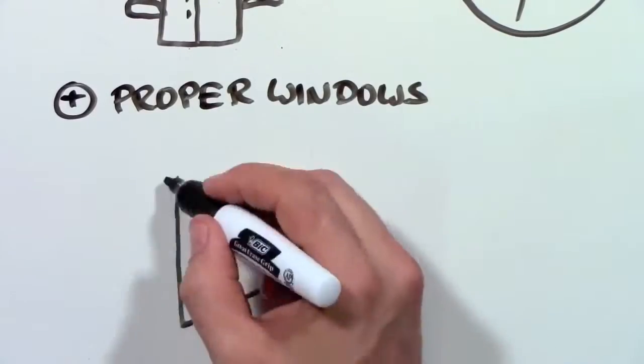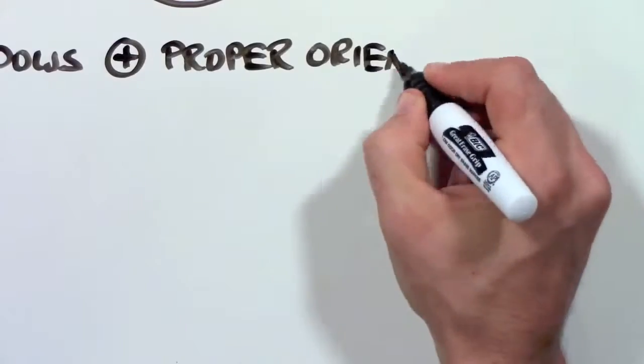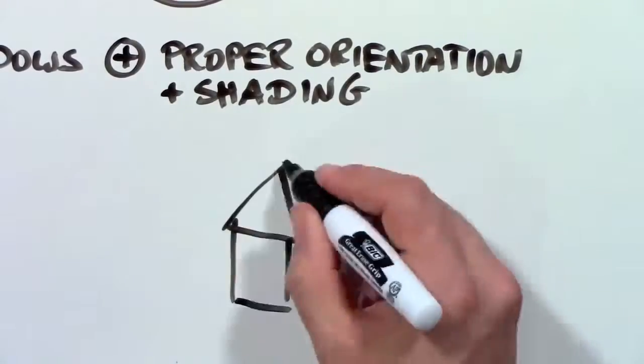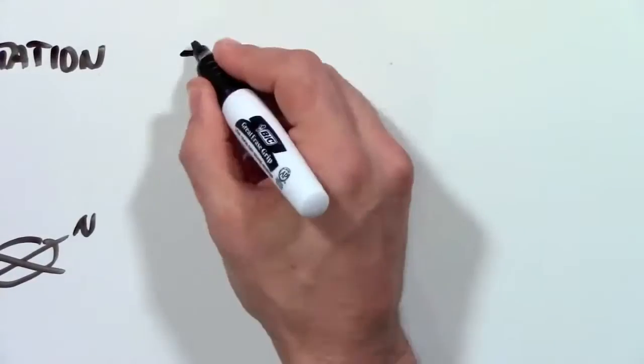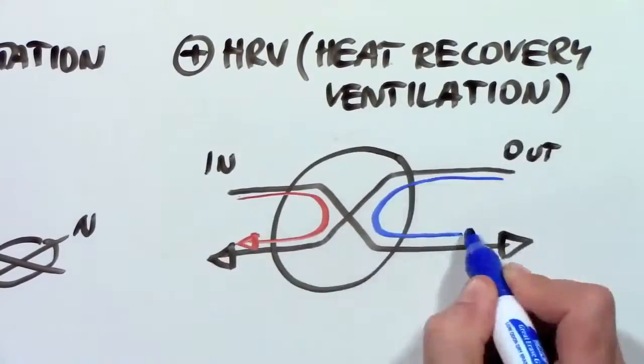Plus, the house needs proper windows most of the time with triple-pane glass. It needs to be oriented properly so the sun can heat it in the winter and shade is provided in the summer. And it uses an HRV, a device that provides the inside with fresh air without letting the heat out.